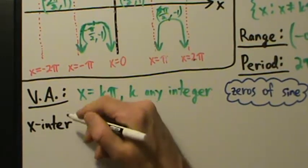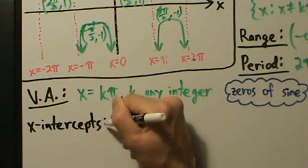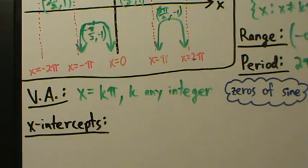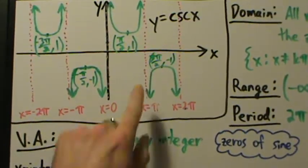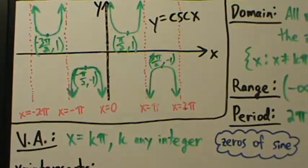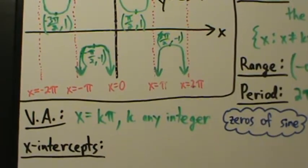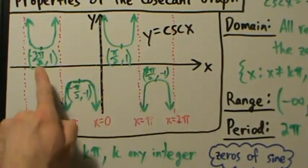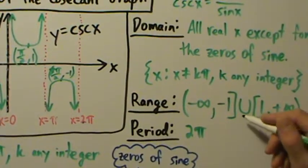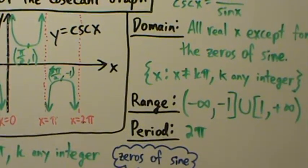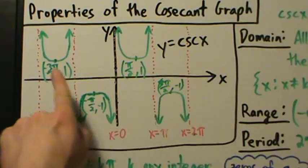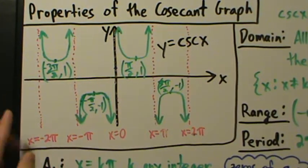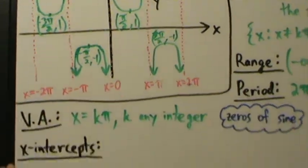How about x-intercepts? Just like with the secant graph, this is straightforward. An x-intercept is a point where y equals zero — where you're on the x-axis. But that never happens here; as we can see from the range, zero is not part of the range. So there's no value of x that makes cosecant of x equal to zero. Since y is never zero, we're never on the x-axis — so there are no x-intercepts.